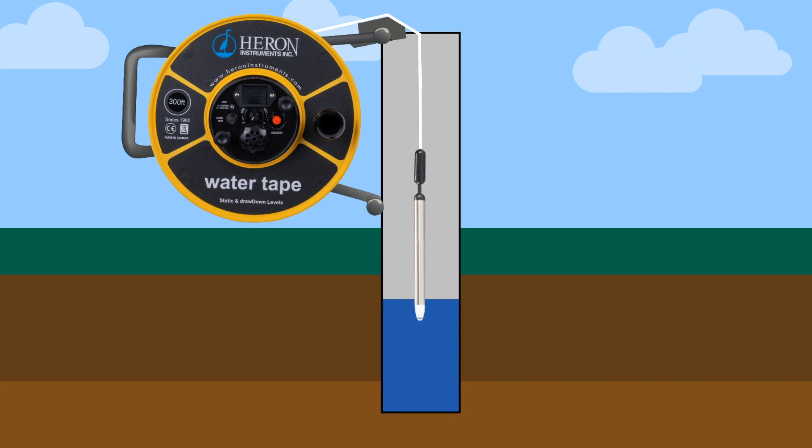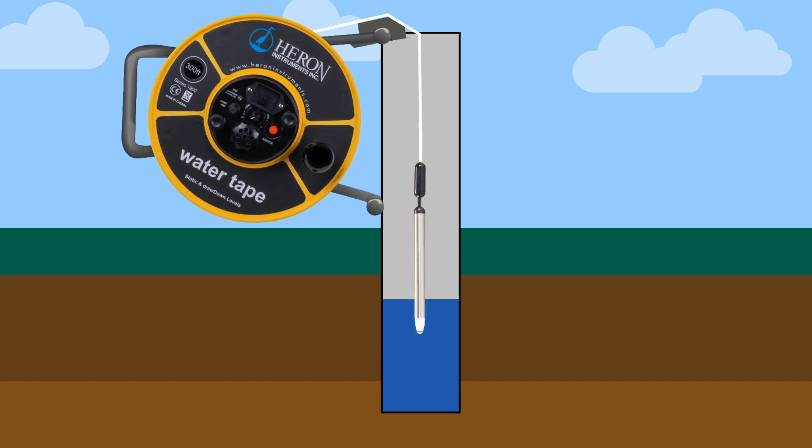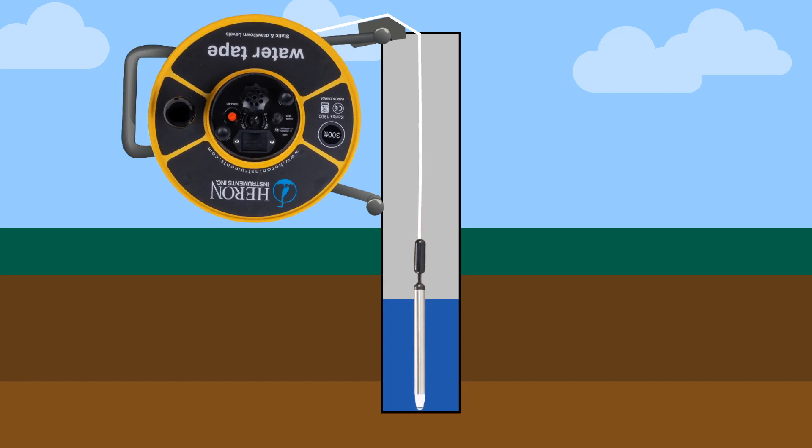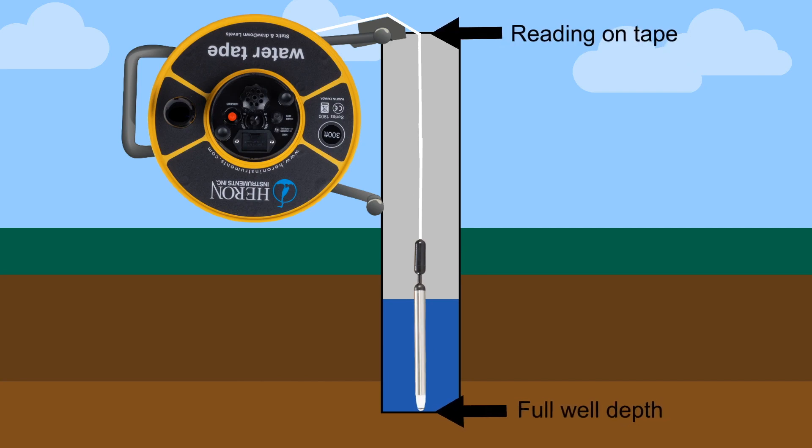Since the water level meter probe is manufactured to be fully submersible, you are able to find the full well depth, providing there are no obstructions. You would simply lower the probe to the bottom of the well and when you feel the slack in the tape, note the markings on the tape for your measurement.